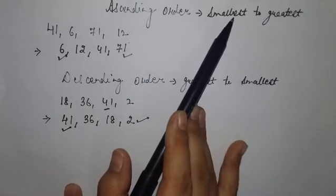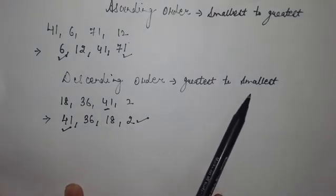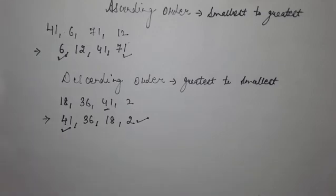So, ascending order is from smallest to greatest and descending order is from greatest to smallest. I hope you understand the topic. So, solve your worksheet accordingly. Thank you.